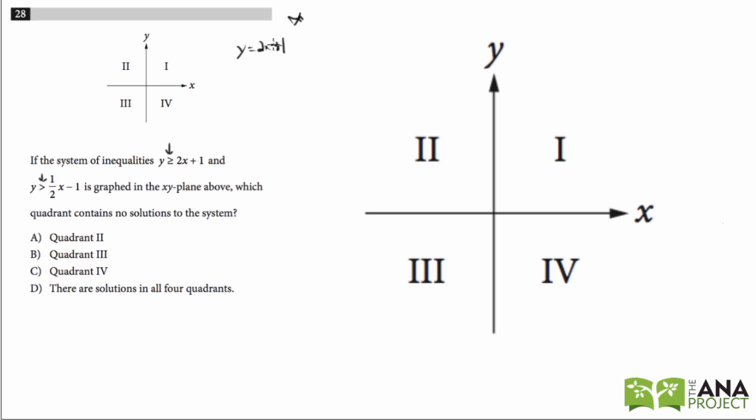How do you graph y equals 2x plus 1? 1 is your y intercept so you go up 1, make a point there, then your slope is 2, 2 over 1, meaning you go up 2 and over 1. Up 2, over 1. And then you connect the dots. There we go.